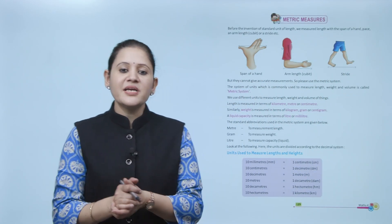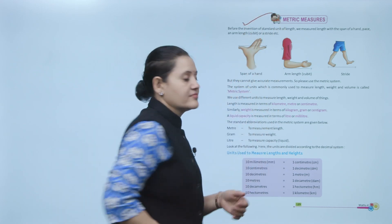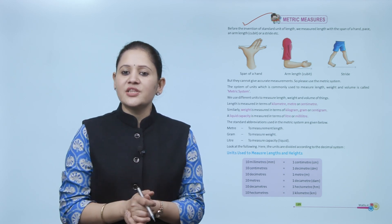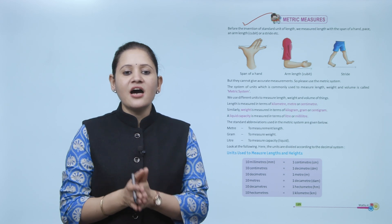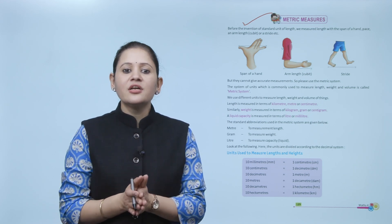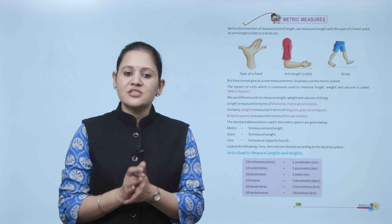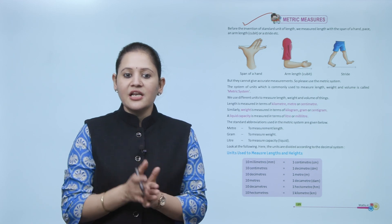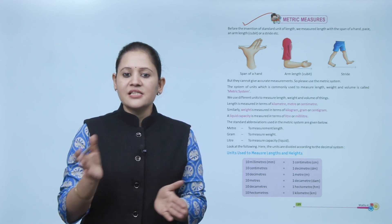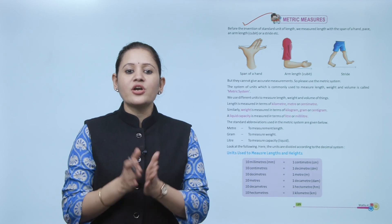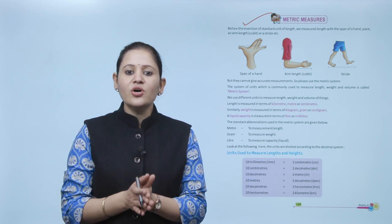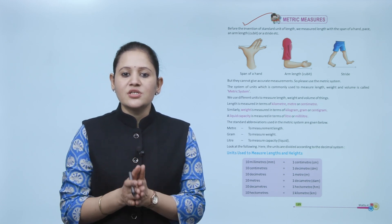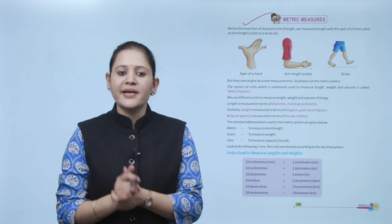Next is the metric system. Before the invention of the standard unit of length, we measured length with the span of the hand, pace, arm length (also called cubit), and so on. We generally used our body parts to measure things — hand span, foot, pace — but they cannot give accurate measurement. So we use the metric system. The system of units commonly used to measure length, weight, and volume is called the metric system.